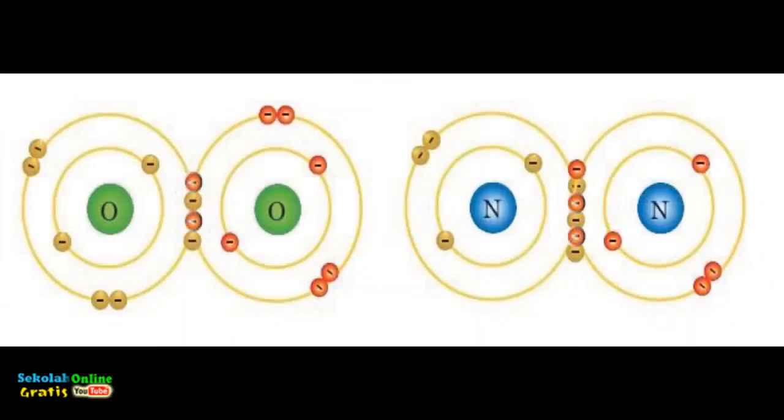The elements oxygen and nitrogen in nature exist as O2 and N2. To be more stable the O atom has two electrons so that its outer shell is filled with eight electrons. In order to fulfill this condition O atoms share electrons with fellow O atoms. While the N atom requires three electrons to be more stable so it uses electrons simultaneously with fellow N atoms.